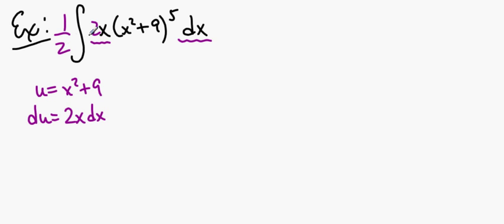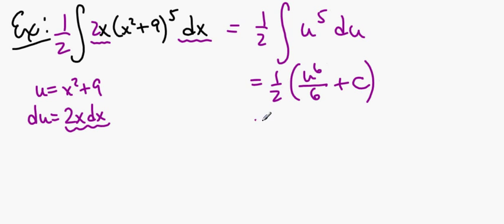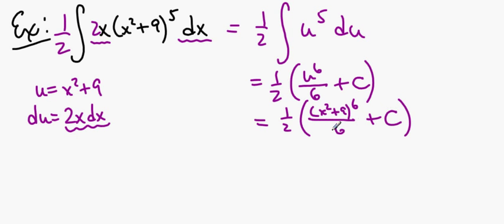So this becomes 1/2 times the integral of — now this thing in parentheses is u to the fifth power, and all the squiggly underlined stuff is just du. This turns out to be really straightforward, because we know the anti-derivative of u⁵: the power goes up by 1, divide by the new power, plus a constant. We substitute back: u⁶ plus a constant. It's important to substitute back, because your original problem was given in terms of x, and x is the variable of focus in your final answer.